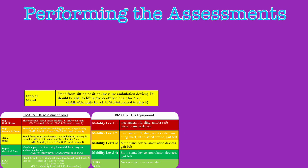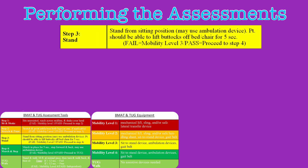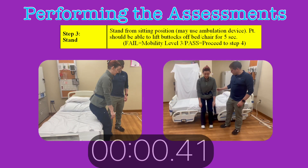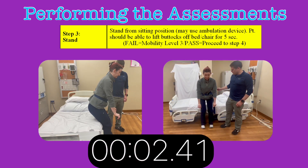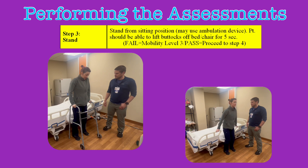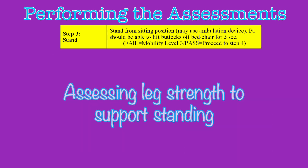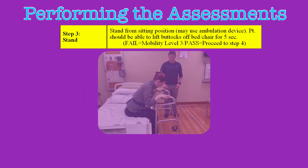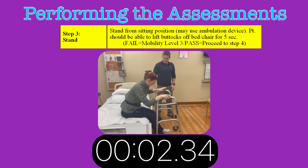If they pass step two, you will progress to step three: stand. The patient needs to be able to stand from a seated position, or at least lift their buttocks off the bed or chair for five seconds. It is okay to allow the patient to use an assistive device like a walker, or for them to use the side rails or armrest to support themselves as they stand. But they must do this task on their own power, not with your assistance. We're moving up from the ankles and knees and assessing for strength in the patient's legs that would support their standing and balance.